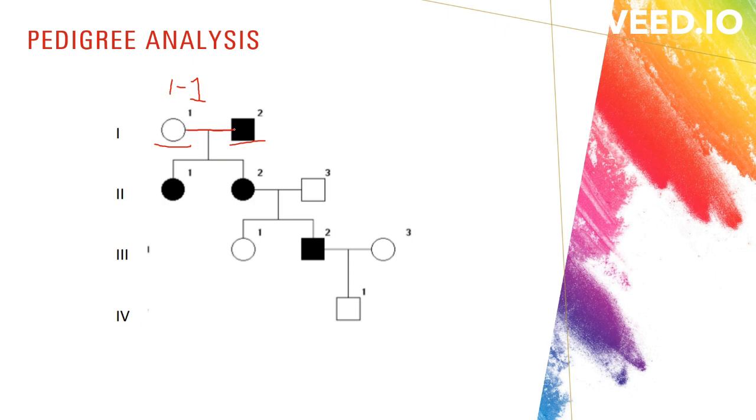In this pedigree diagram, you can see there are three pairs that have mated: 1-1 and 1-2, 2-2 and 2-3, and 3-2 and 3-3. The vertical line connects parents to their children.